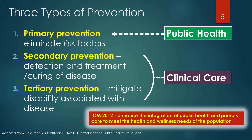Tertiary prevention is associated with individuals who have been damaged by a disease and receive an intervention to mitigate the disability associated with that disease. They will never be cured. Hospice care for terminally ill patients would also fall into tertiary prevention. Secondary and tertiary prevention are the primary mission of clinical care systems and professionals. The Institute of Medicine in 2012 recommended the enhanced integration of public health and primary care to meet the health and wellness needs of the population.